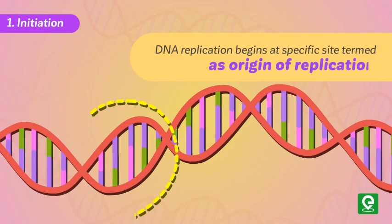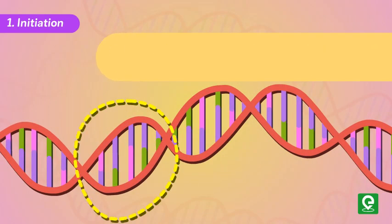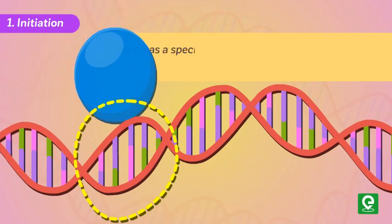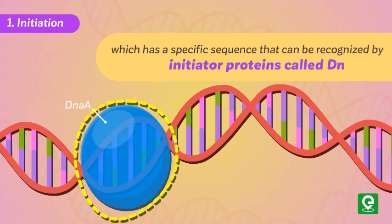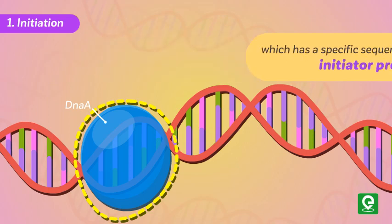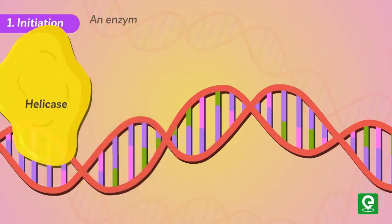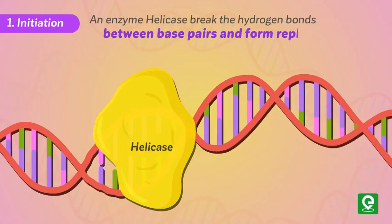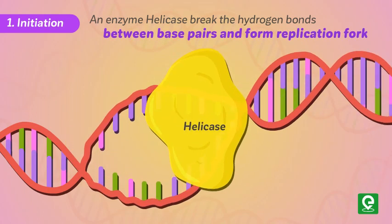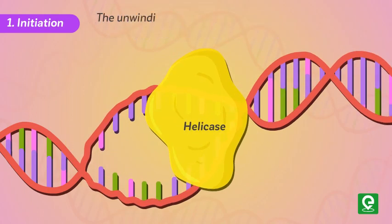Step one — Initiation: DNA replication begins at a specific site termed the origin of replication, which has a specific sequence recognized by initiator proteins called DNA-A. An enzyme, helicase, breaks the hydrogen bonds between base pairs and forms the replication fork.